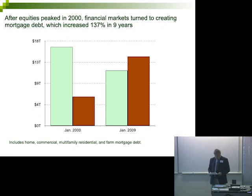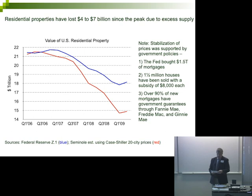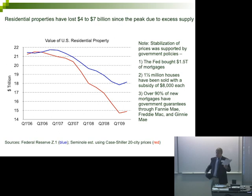The country was building 3 million homes a year when maybe 1 million were actually needed. We now have 6 million excess homes, not including vacation and rental homes, and there are 19 million vacant homes — 14% of the total housing stock. Housing prices are now down 30% from the peak and are only leveling off in the short term due to major federal government actions to keep rates low. The Fed is buying $1.5 trillion of mortgages. Over 1.5 million homes have been sold with the $8,000 subsidy. Over 90% of new mortgages have government guarantees through Fannie Mae, Freddie Mac, and Ginnie Mae. The U.S. government today basically owns or backstops the entire housing industry.